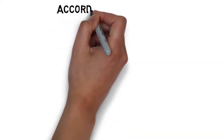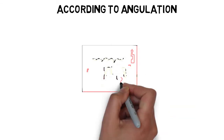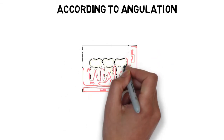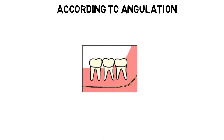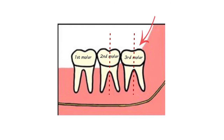The first classification is based on the angulation of the impacted third molar. This classification provides us with an initial assessment of the difficulty of the extraction and it is also the most commonly used classification with respect to planning a treatment. It is based on the position of the long axis of the third molar with respect to the long axis of the adjacent second molar. There are four main classes, named in order of increasing difficulty for extraction.